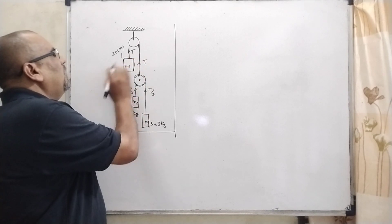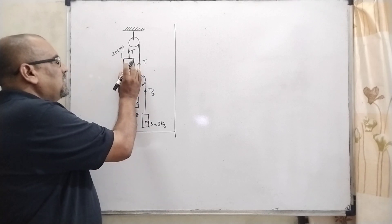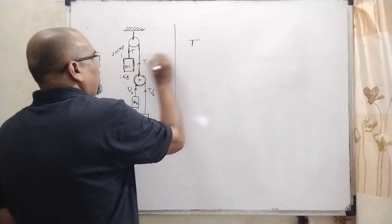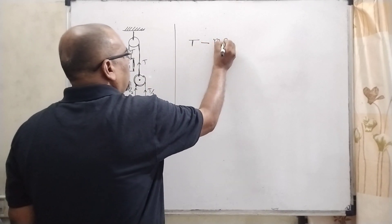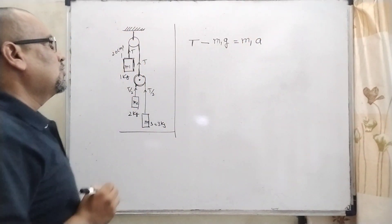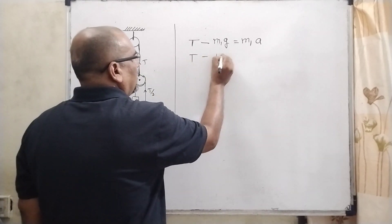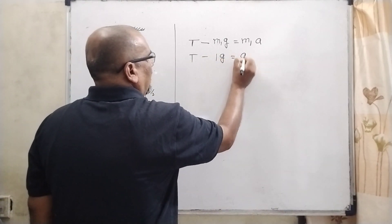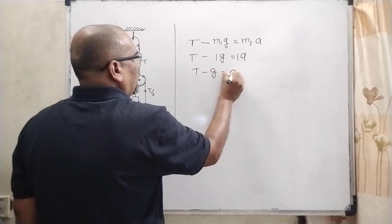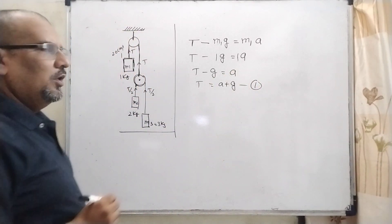You can see that M1 goes up. Then the resultant force, that is T minus M1*G, is equal to M1*A. Substituting the value of M1 = 1 kg: T minus G equals A, then T equals A plus G. This is the first equation.